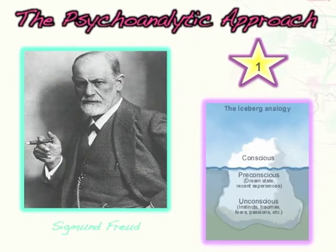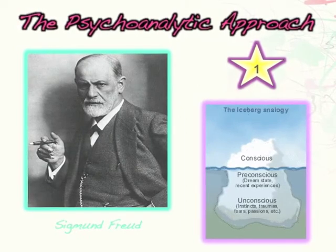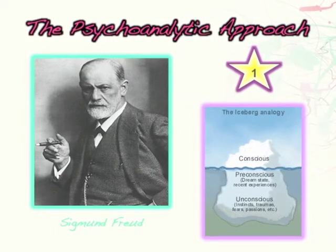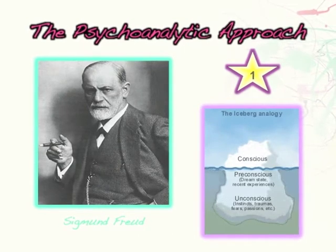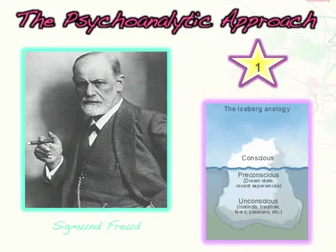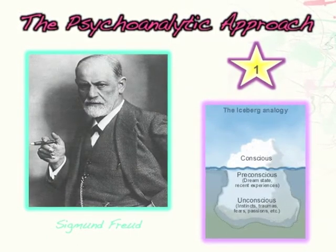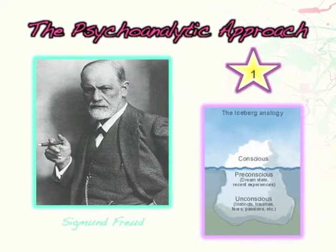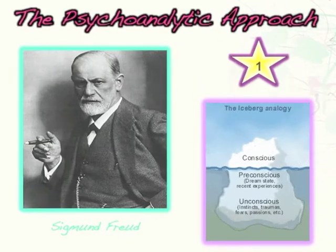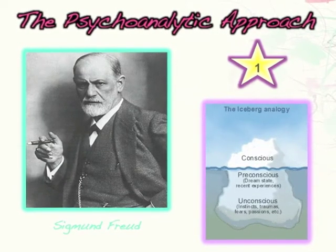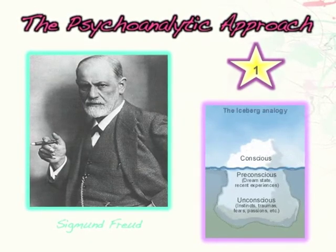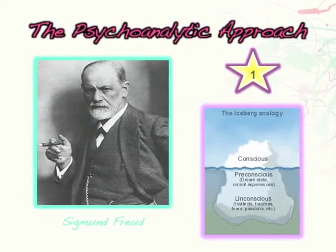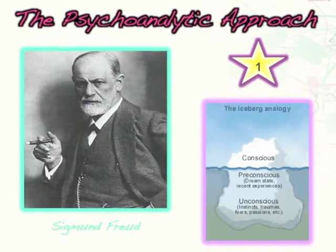You'll notice on the slides there's a number within a star to help you stay organized — when we switch to a different theory you'll see the star again with a different number. Sigmund Freud believed that the mind was divided into three parts: a conscious mind, a pre-conscious mind, and an unconscious mind. He used the iceberg analogy to illustrate these. The conscious is the tip of the iceberg — above the surface — representing your awareness of both your internal and external environment.